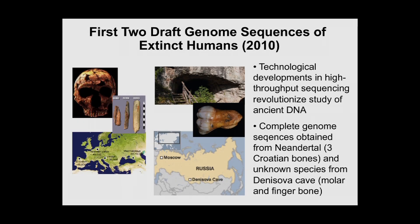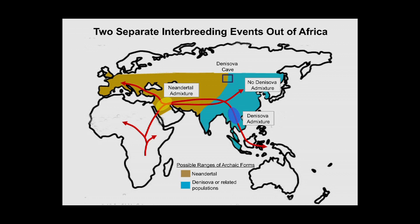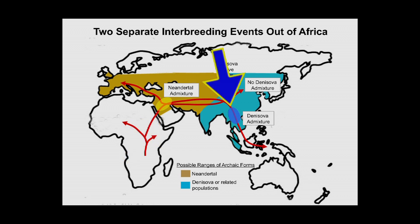DNA sequencing technology had advanced to the point where it became feasible to sequence whole genomes of extinct forms. Draft complete genome sequences were obtained from Neanderthals as well as from a mystery form called Denisova, identified from a molar and a finger bone. The bottom line is that non-Africans and a group from Australasia or Oceania contain a small amount of their genome directly matching the Neanderthal and Denisovan genomes respectively. To explain this pattern, two interbreeding events were proposed: one as modern humans first left Africa into the Middle East, mixing with Neanderthals; and a second in Southeast Asia, just before modern humans reached New Guinea and Australia about 40,000 years ago.